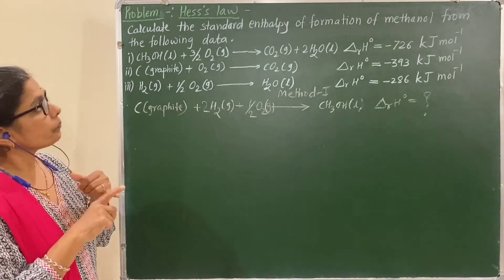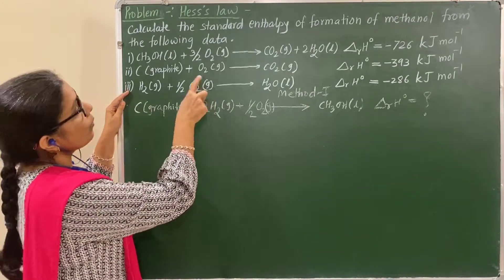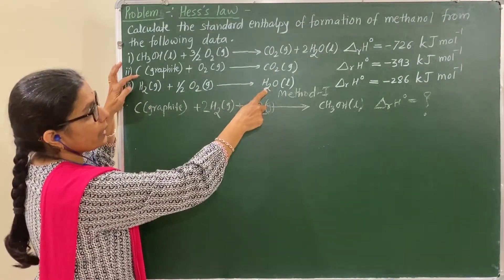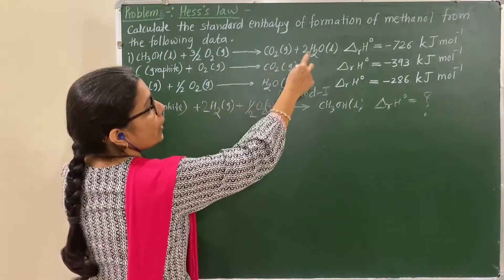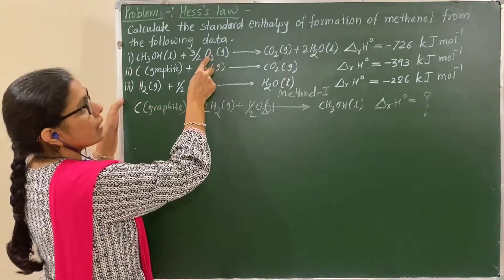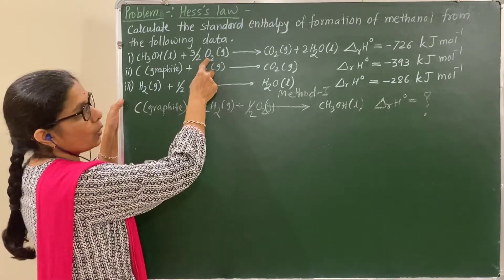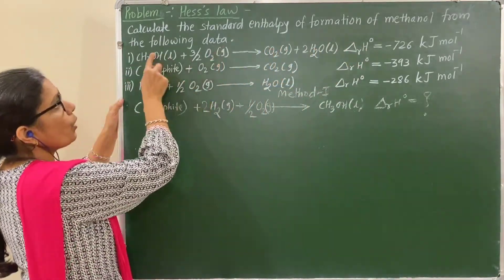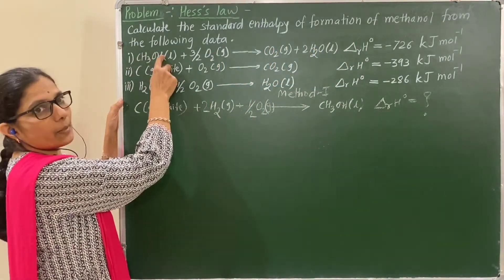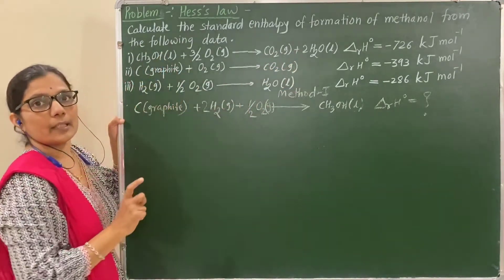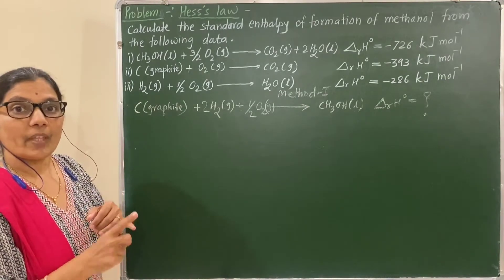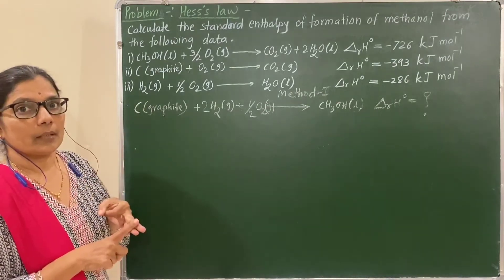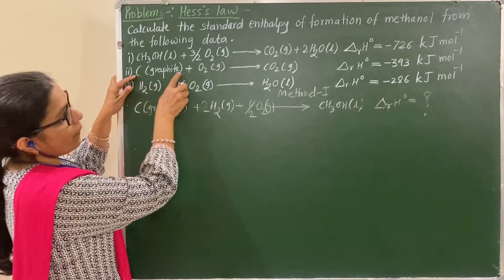Now the second method: the formation of CO₂ and the formation of H₂O are given — that is, the standard enthalpies of formation of CO₂ and H₂O are known. The standard enthalpy of formation of elements in standard state is zero. The enthalpy change for the combustion reaction is known. Substitute these values into the formula and find out the enthalpy of formation of methanol. This is the second method using the first formula.